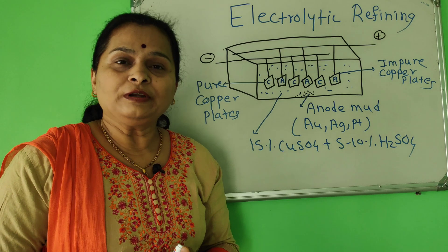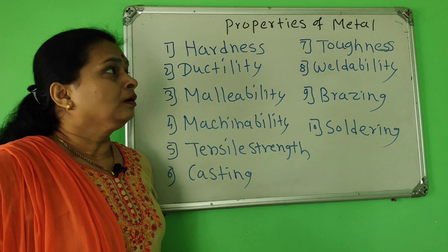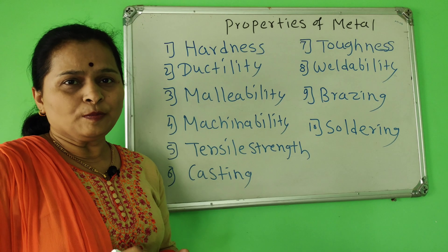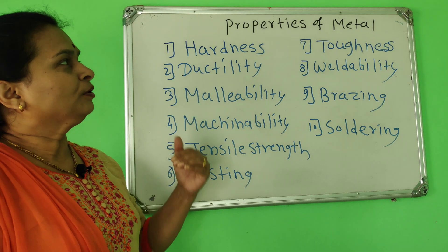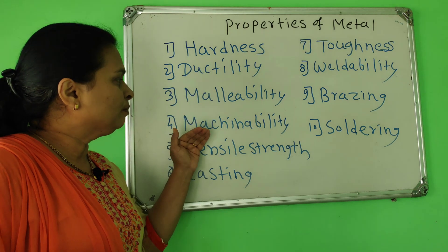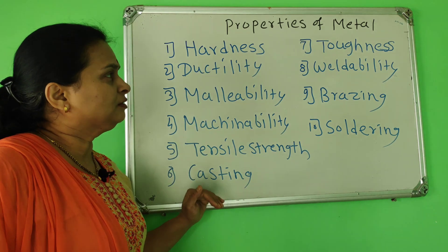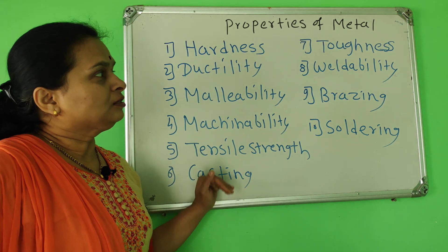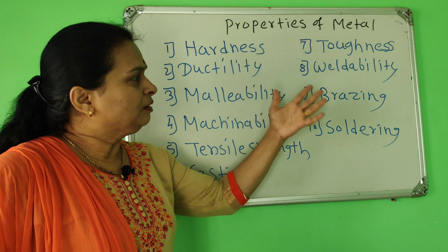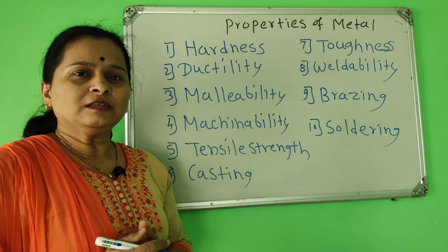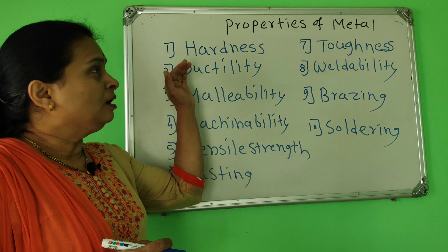Now let us see different properties of metal. These are some properties of metal: hardness, ductility, malleability, machinability, tensile strength, casting, toughness, weldability, brazing and soldering. Let us see one by one with their examples.